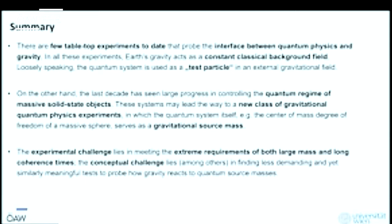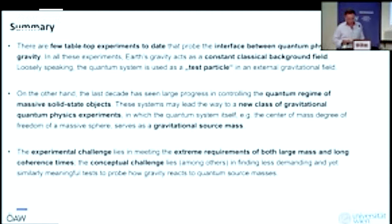There are a few tabletop experiments to date that probe the interface between quantum physics and classical gravity. In all these experiments, it's actually typically Earth's gravity that serves as a constant classical background field to probe the effect of gravity on those quantum systems. The quantum systems act as test masses in the external gravitational field.